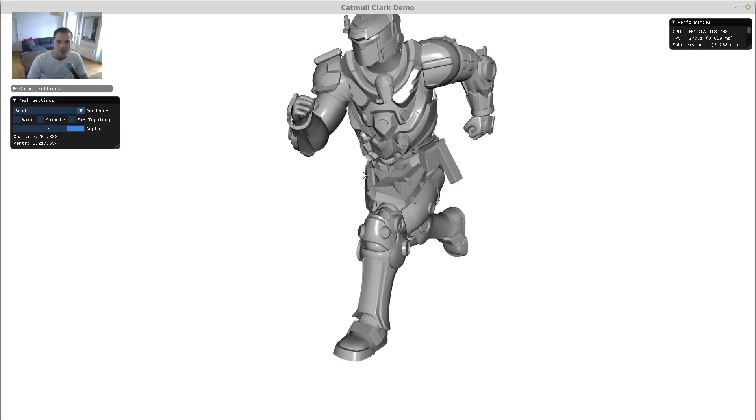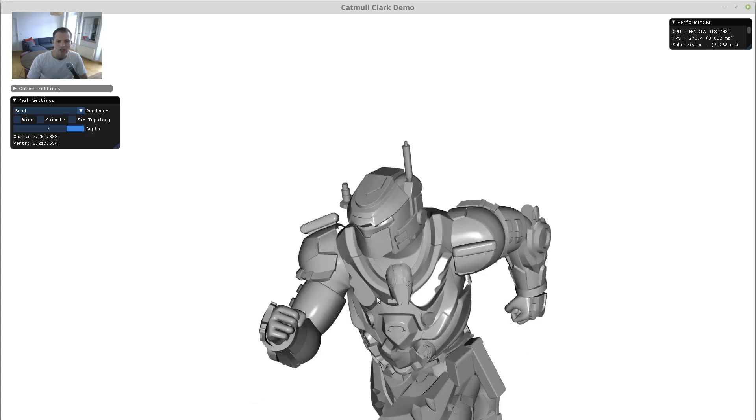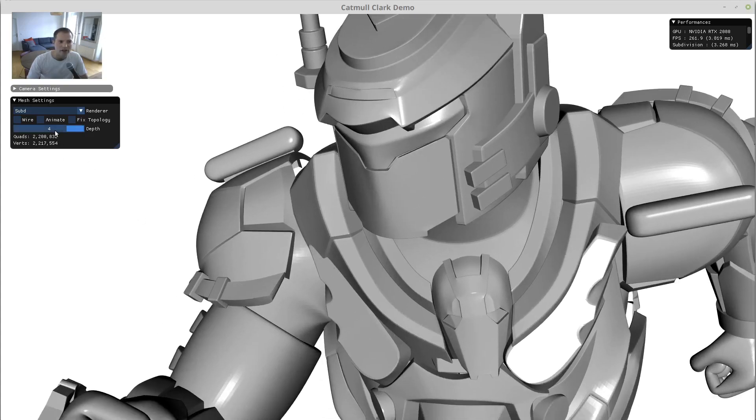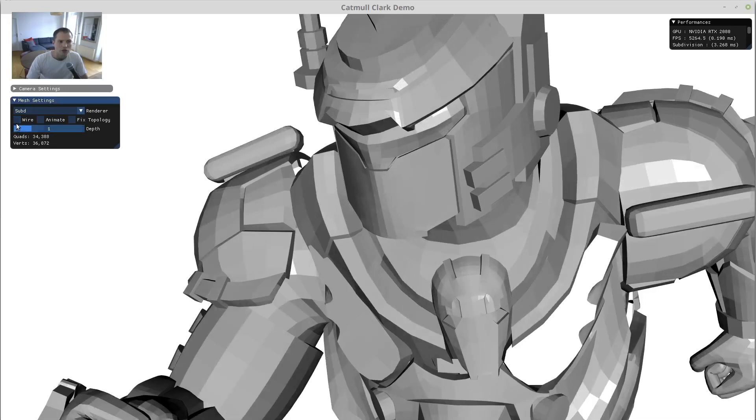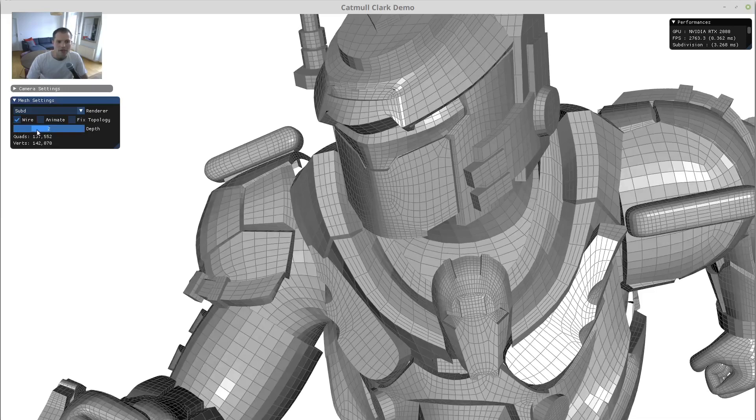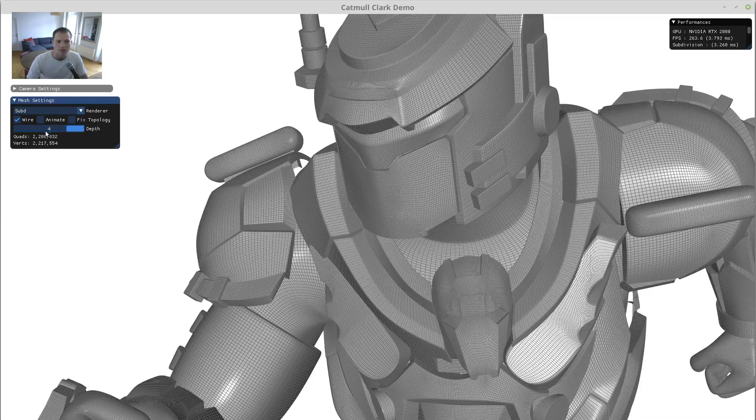And the way this is done is by successively refining the control cage into these quads that get smaller and smaller as the refinement is repeated.